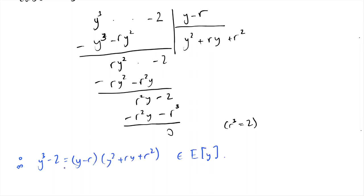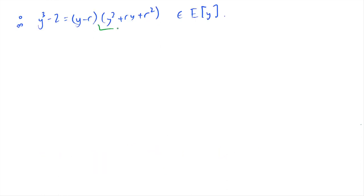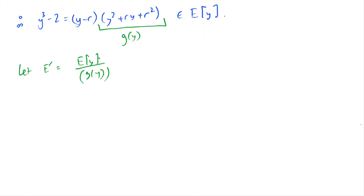This allows us to factor y cubed minus 2 inside E[y]. The other cube roots of 2 must satisfy the remaining quadratic polynomial. We've seen that this quadratic cannot split in E[y], because otherwise we would have found those roots in E already — so they do not live in E, and the quadratic does not decompose into linear factors. Let's call this quadratic g. The next step is to extend E by this polynomial, so let E' be E[y] modulo g(y). This corresponds to adding a root of the quadratic into E.